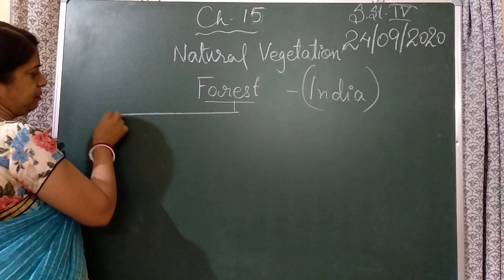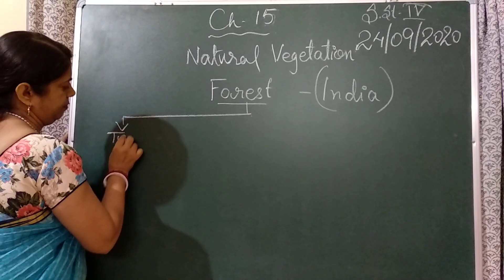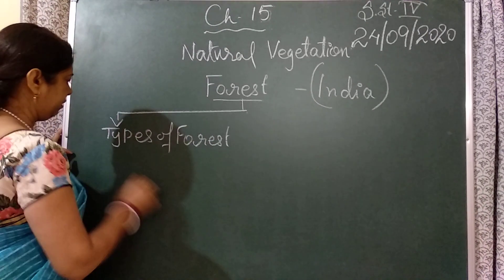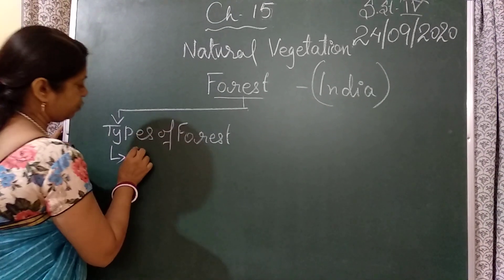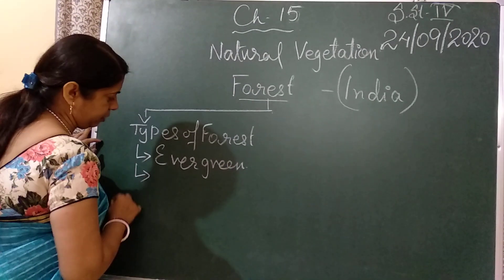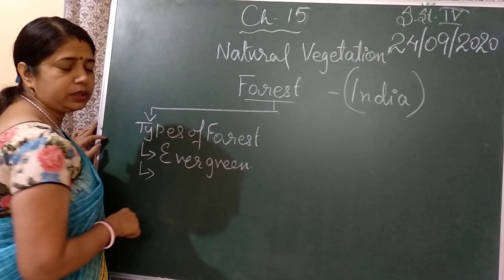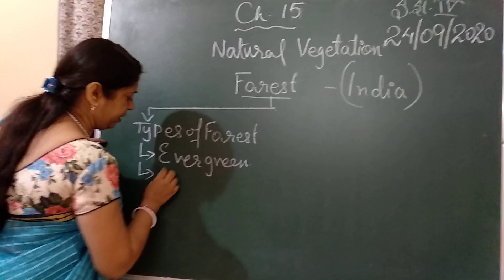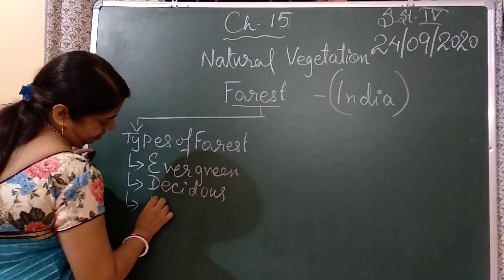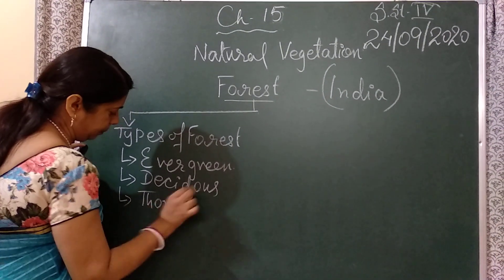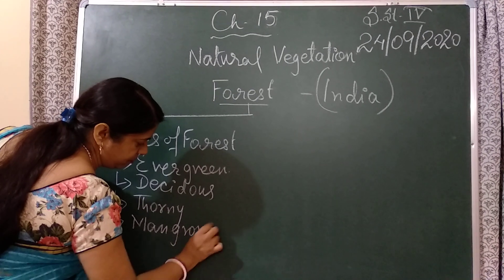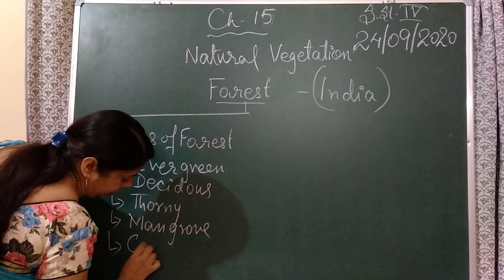First of all we can see the types of forests. The first one is Evergreen Forest. After Evergreen Forest, Deciduous Forest. Then Thorny Forest — all depending upon the climate and the place. Next is Mangrove Forest, and the last one is Coniferous Forest.